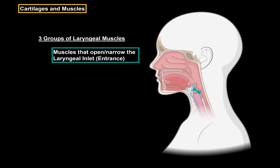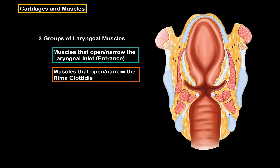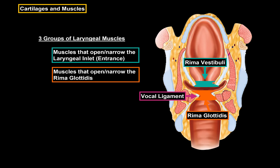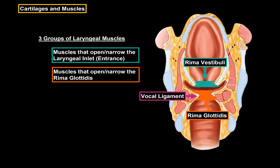It opens and narrows the entrance of the larynx. The next ones are the muscles that open and narrow the rima glottidis. The rima glottidis is situated between the vocal folds, or the vocal cords. The folds superior to the rima glottidis are called the rima vestibuli, between the vestibular folds. The vocal ligaments are formed by the superior margin of the conus elasticus. So the vocal ligament is part of the vocal cords, and the rima glottidis is between the vocal cords.